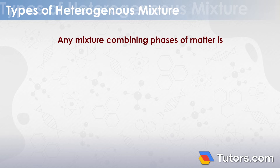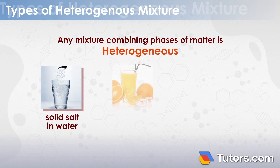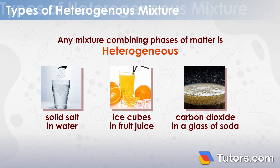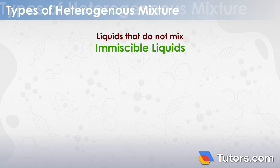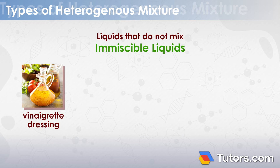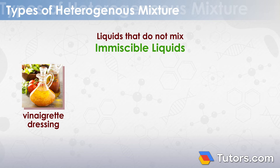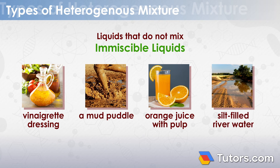Any mixture combining phases of matter is heterogeneous, as with solid salt in water, ice cubes in fruit juice, or carbon dioxide bubbles rising in a glass of soda. Liquids that do not mix — immiscible liquids — are always going to give you heterogeneous mixtures. This is why your Italian dressing must be shaken before being poured on. Oil and vinegar are immiscible. Other liquid heterogeneous mixtures include mud puddles, orange juice with pulp, and silt-filled river water.